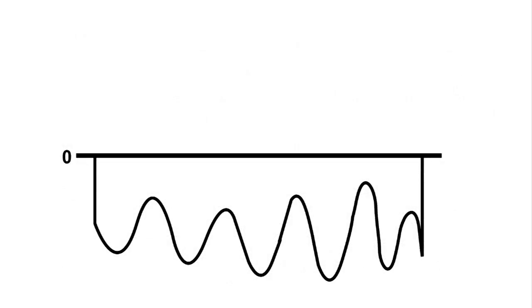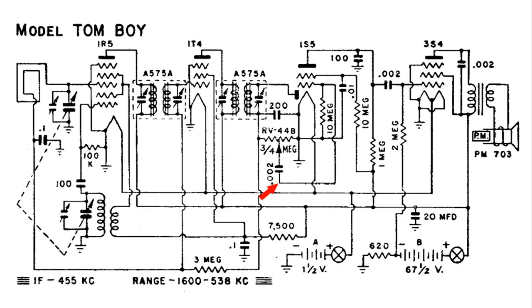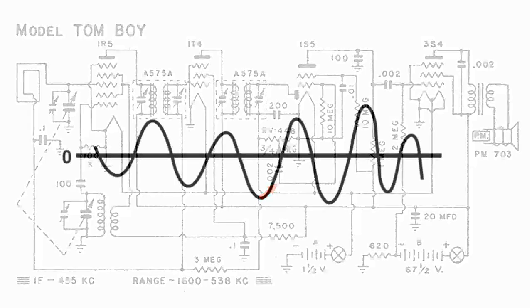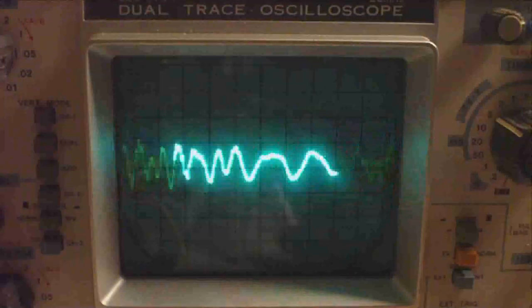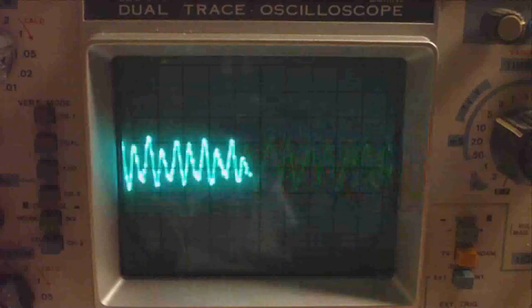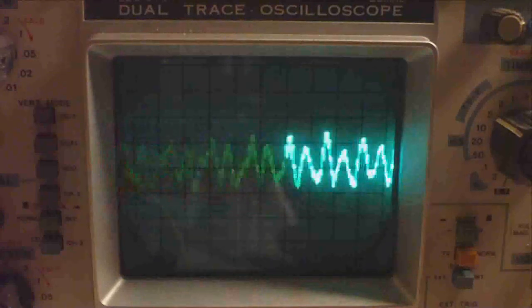And when that signal passes to this point, passes through that .002 microfarad capacitor, it has only the audio information now, like this. And this is what it looks like at that point, using the oscilloscope.